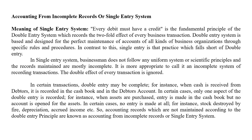If you have a single entry system and books of accounts, it will be incomplete because you can use only one aspect. But if you have a transaction in the double entry system, you can use two aspects — the debit and credit aspect. In single entry system, only one aspect is used; it is more appropriate to call it an incomplete system of recording transactions. In certain transactions, a double entry may be completed.